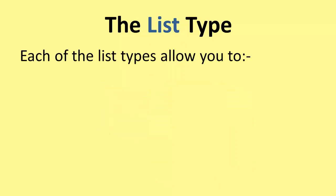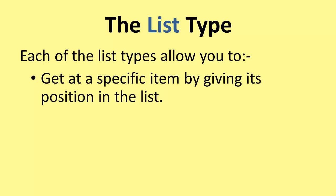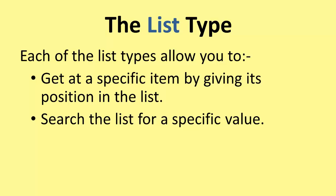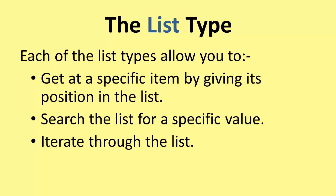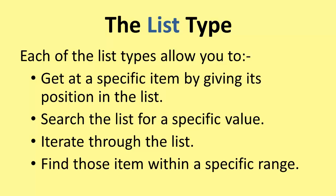The most common type we're going to look at is the list type. Each of the list types has specific things that it can do. It can get at a given item by its position in the list — so you could say System.out.println names[5], and that would display the sixth item in the list, because all the numbering starts at zero. You can search a list for a specific value, iterate through the list, or find items within a specific range — for example, return items where the names are between Pittman and Wix.